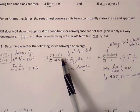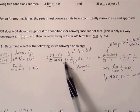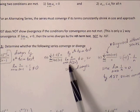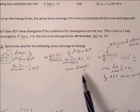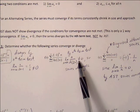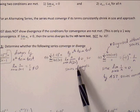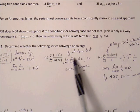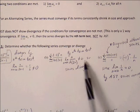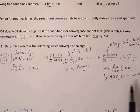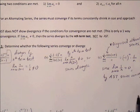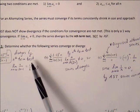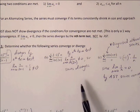The second example has a_n = n/ln(2n). The limit as n approaches infinity does not equal 0 because the numerator grows faster than the denominator — it actually goes to infinity. Therefore, this series also diverges by the nth term test. We have not had to use the alternating series test for either of these.